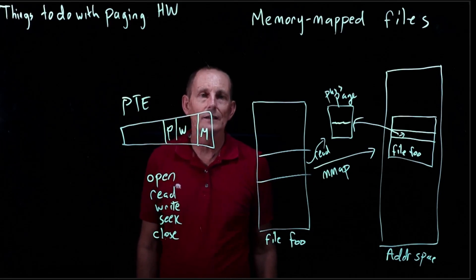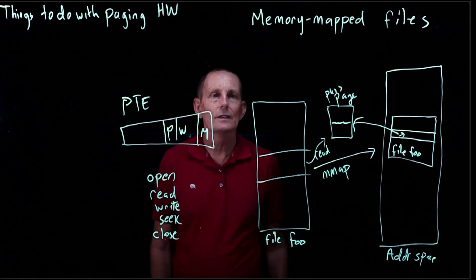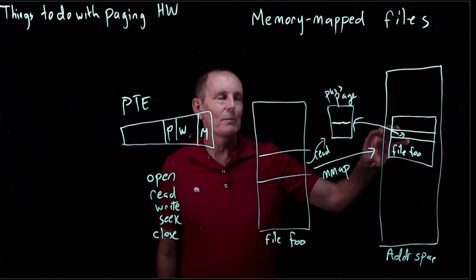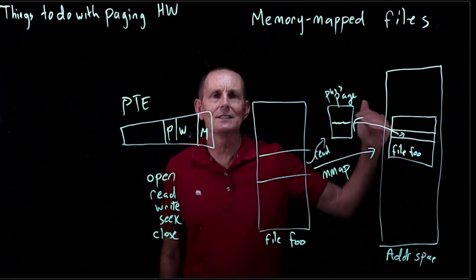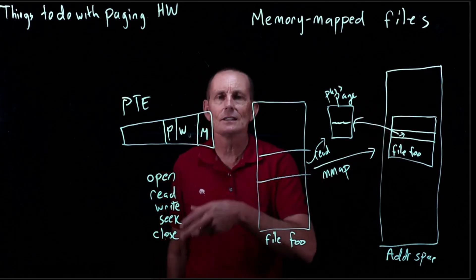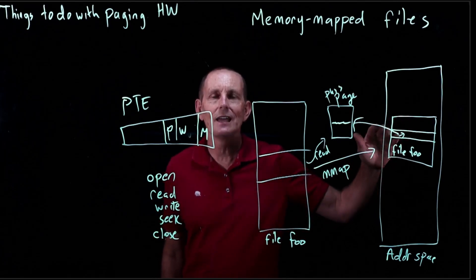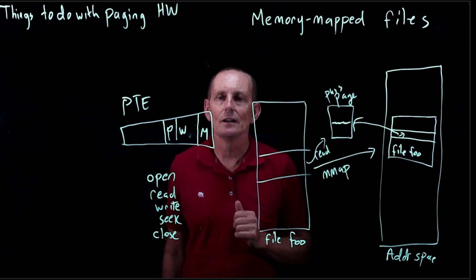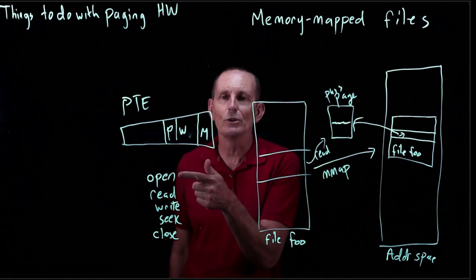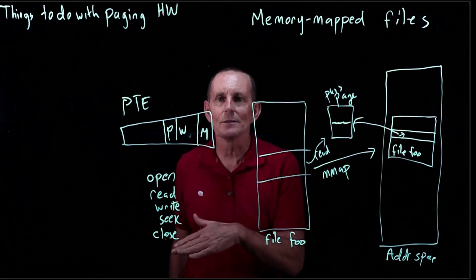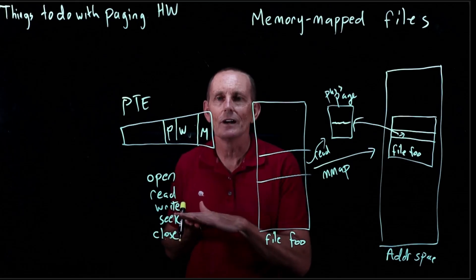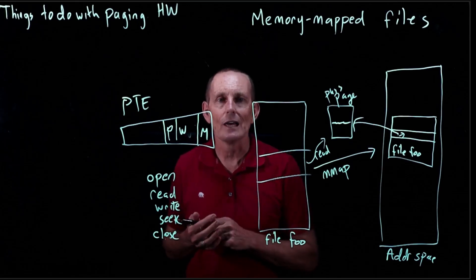One potential downside of the memory-mapped file is it's difficult to have any way to set the end of file. We can easily do that with an API, but it's hard to specify exactly, I have now changed what the end of file is of this file. Whereas if you open a new file, write some stuff, then clearly the file ends where the last write was.